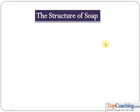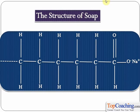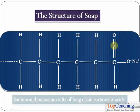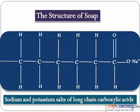Before we learn about the action of soap and detergent, we have to first learn about the structure of soap. What does soap actually consist of? Soap in general consists of the sodium and potassium salts of long chain carboxylic acids. Different soaps are basically the sodium salts or the potassium salts of carboxylic acids.